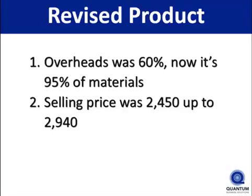Second example: John is making furniture. In his pricing method, John was including 60% for overheads — materials, direct labour, rent, insurance and other costs. When I looked at his actual costs, John's overheads were 95% of materials, so there was a gap — his overheads were higher than the level he was including in his selling prices. Using his old method, John's selling price on a typical job was €2,450. When I included the correct level of overhead, that price went up to €2,940 — almost €500 difference — by including costs properly to get the selling price to the correct level.